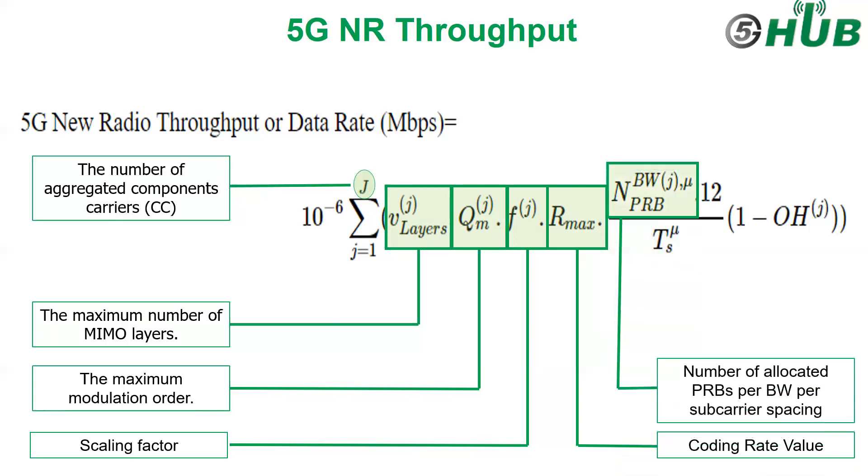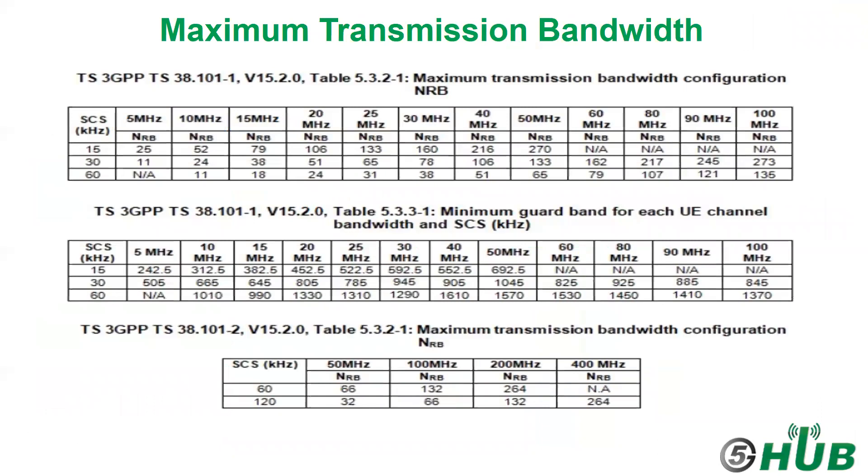Now we will talk about a very important term: the number of allocated PRBs or physical resource blocks per bandwidth per subcarrier spacing. For that, we need to go to a table from 3GPP to determine the maximum transmission bandwidth configuration NRB for each user equipment channel bandwidth and subcarrier spacing. For example, if we are talking about bandwidth 100 MHz for subcarrier spacing 30, we will have 273 physical resource blocks.